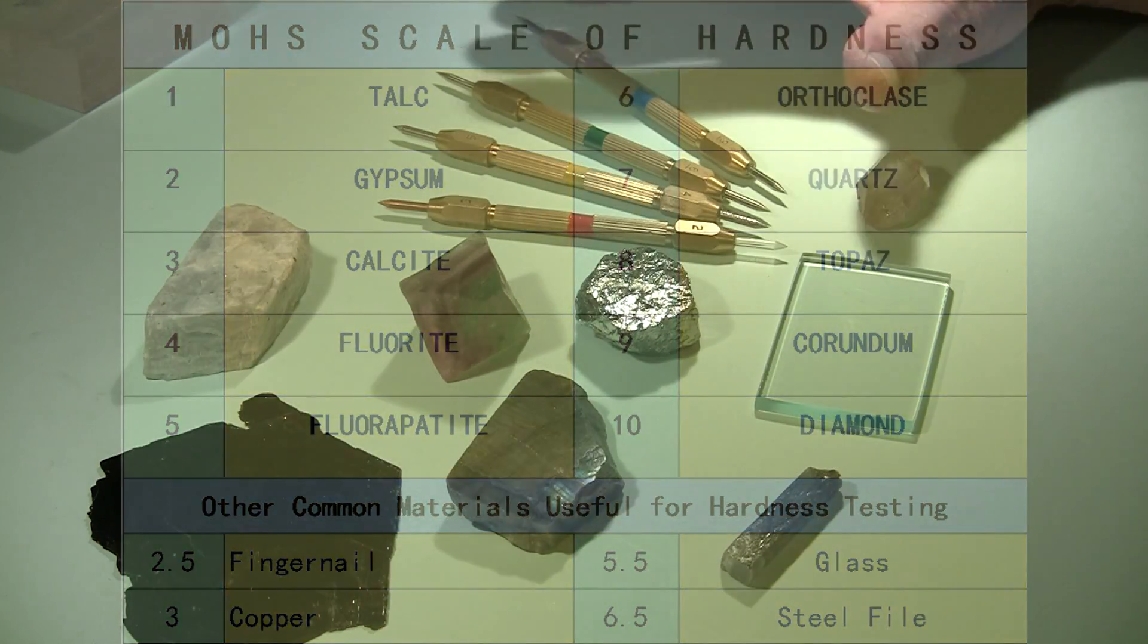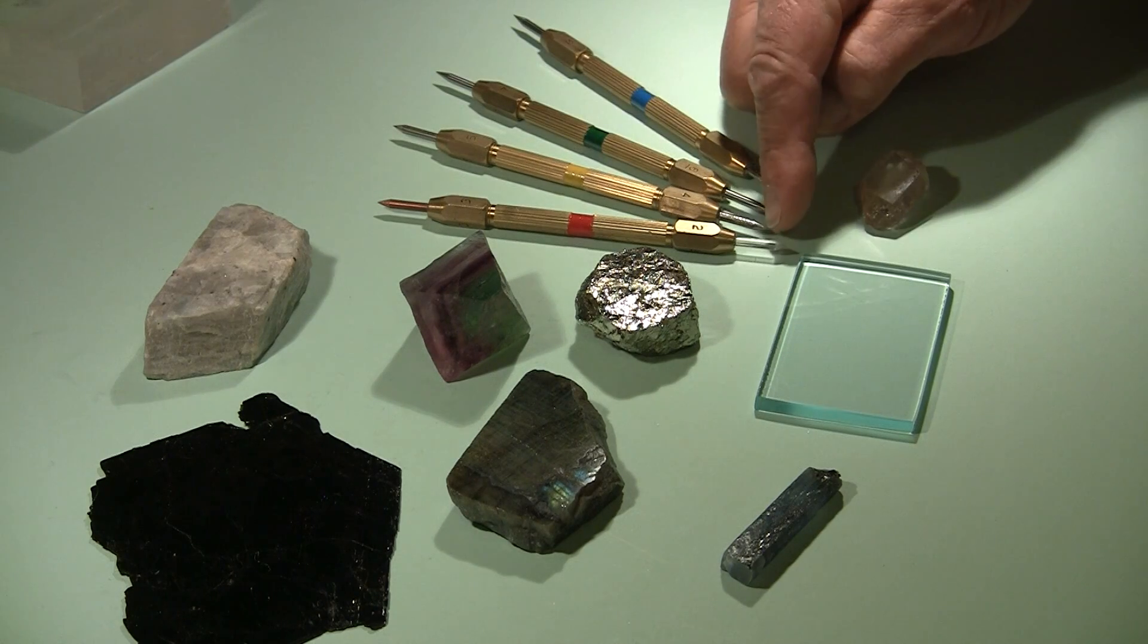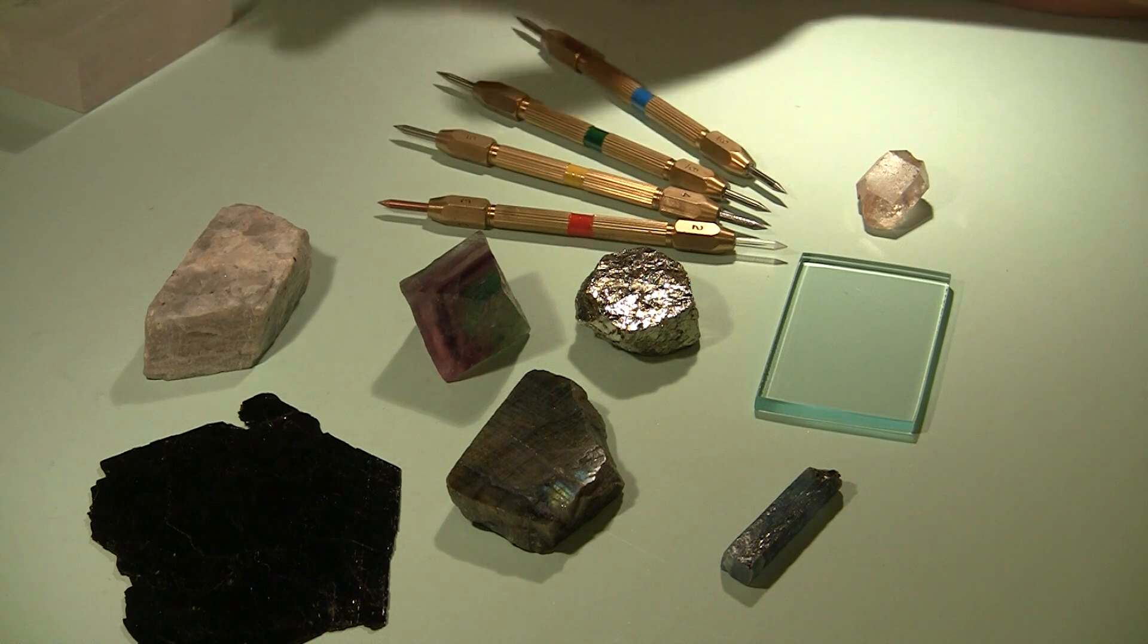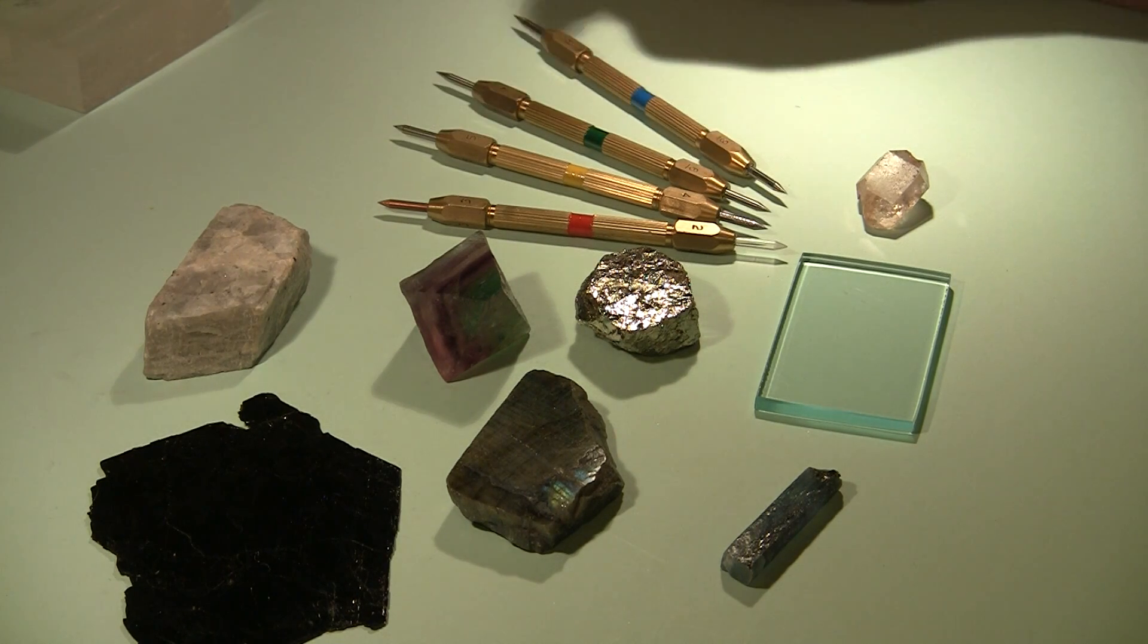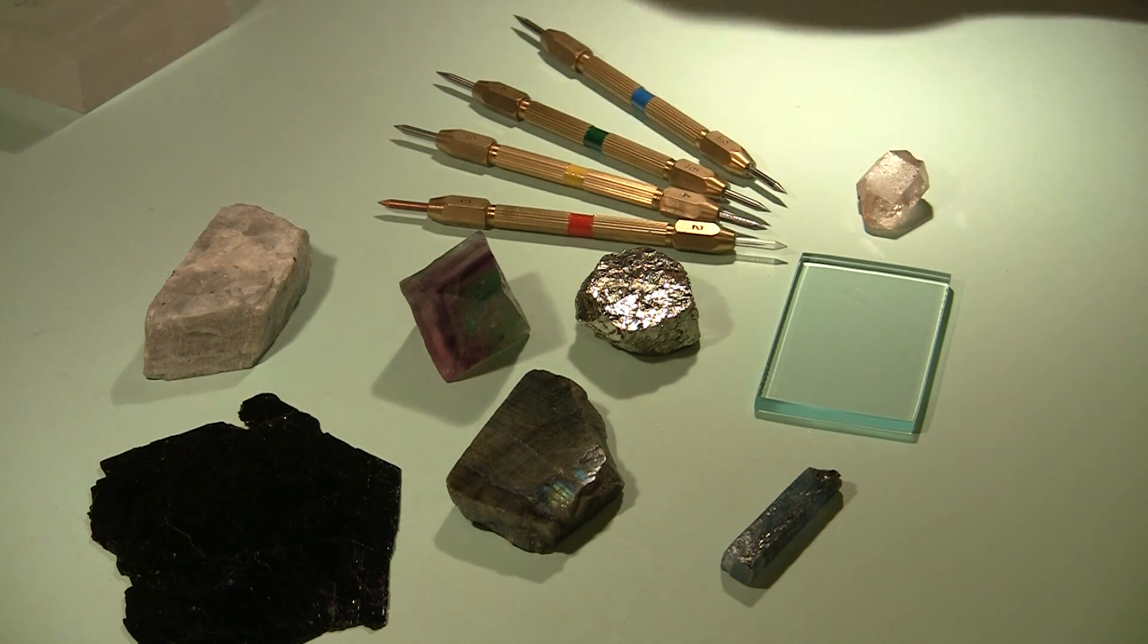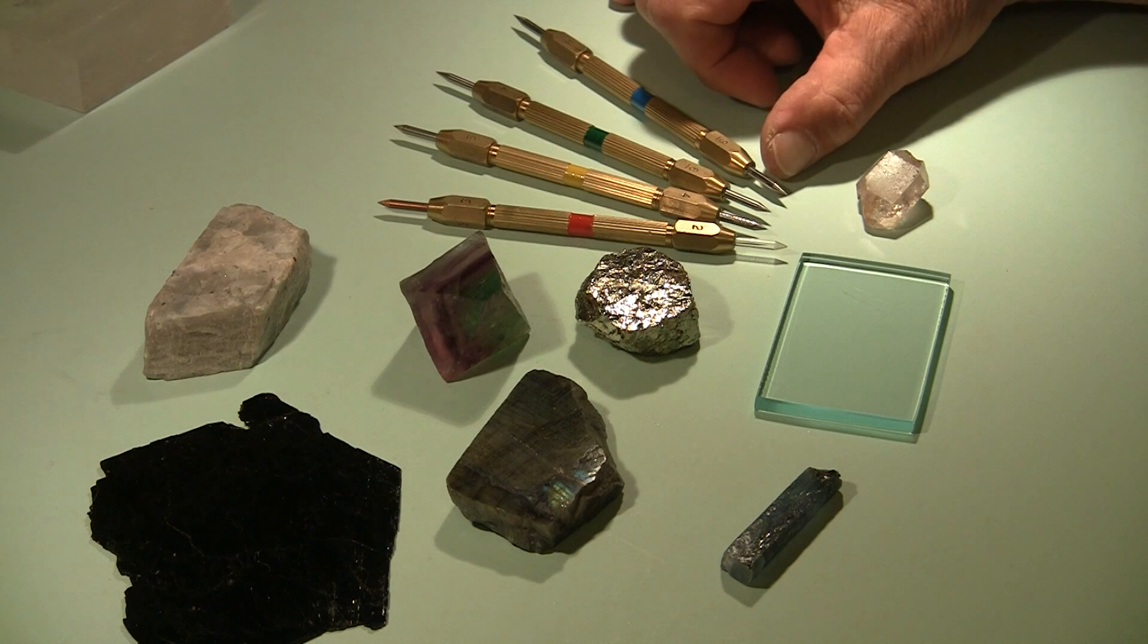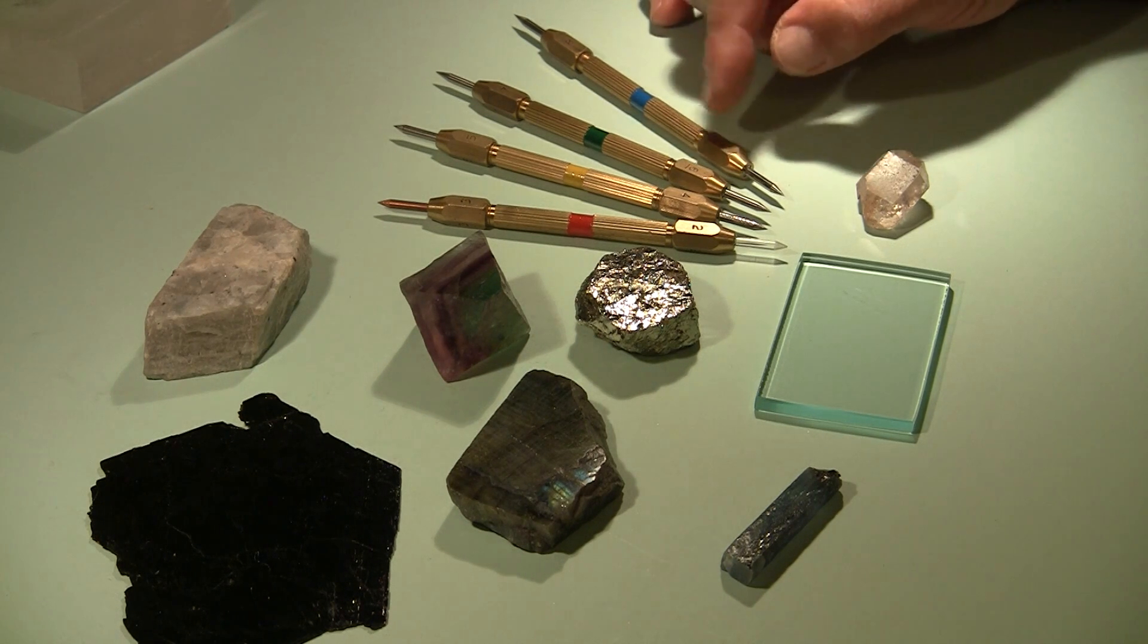We also have some hardness points here. This one has a piece of plastic with hardness of about 2. On this end is copper, hardness of 3. And then the next three sets of pens have different types of metal alloys for hardnesses from 4 all the way up to 9. No diamond point. The hardness point here with a 9 scratches everything except diamond.